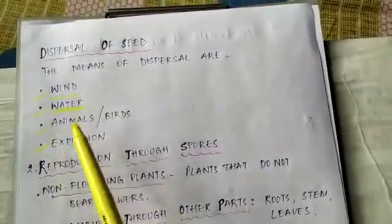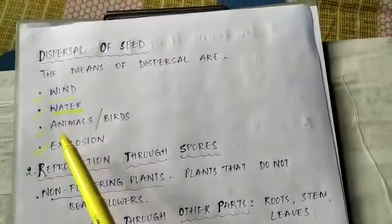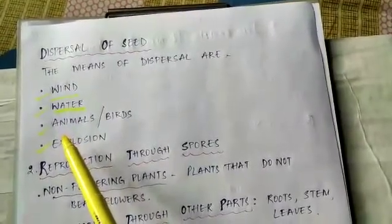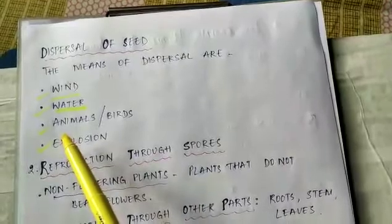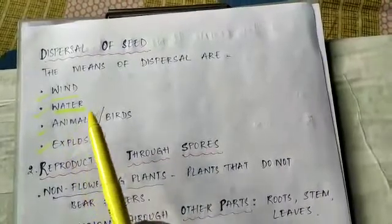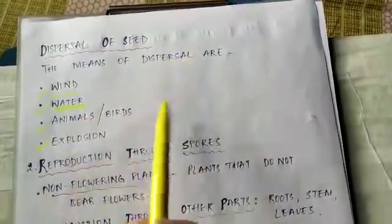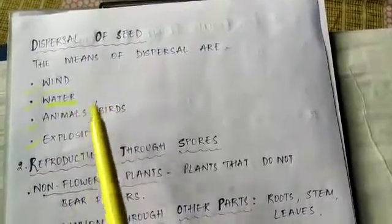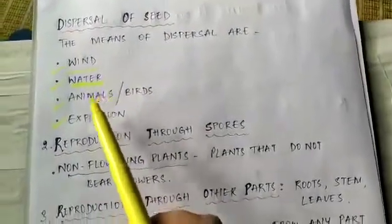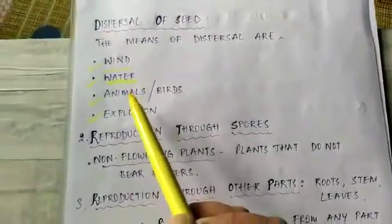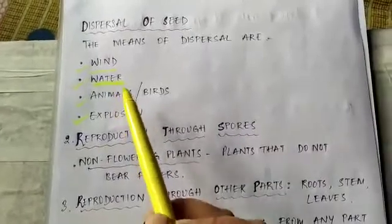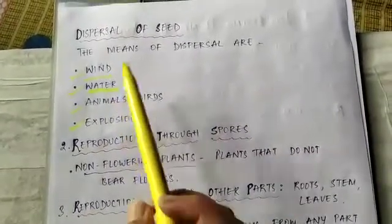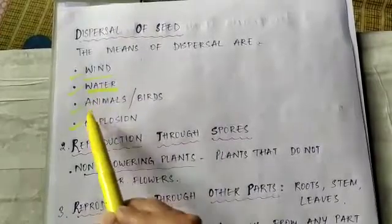Next is dispersal by water. Seeds of plants that grow near water are dispersed through water. Seeds are carried away with water until they get a fitting place for their germination. Examples are coconut, palm, water lily — these are dispersed through water.